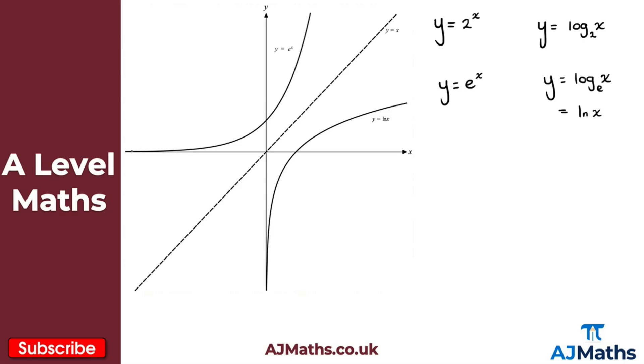What we can see here is a sketch of y equals e to the x, a sketch of y equals the natural logarithm of x, and then this dotted line here of y equals x. This is showing us the curve y equals e to the x. We can reflect that in the line y equals x, and we get y equals the natural logarithm of x. This is because they're the inverse of each other.